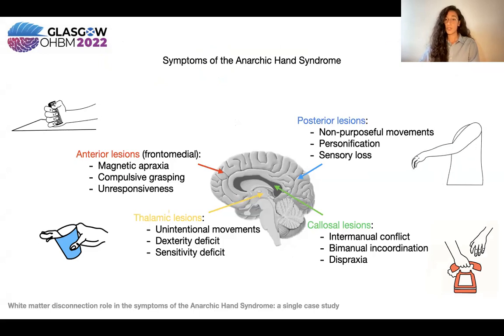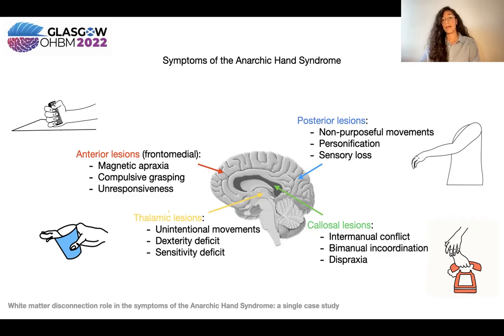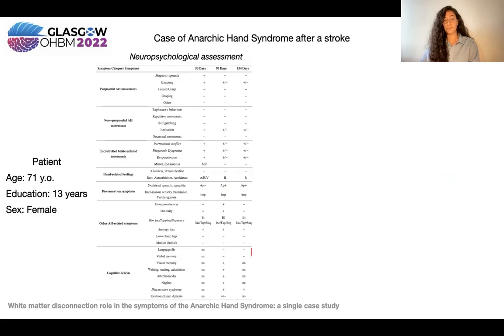Callosal lesions are associated with intermanual conflict, while dexterity deficits are more typical of thalamic lesions.